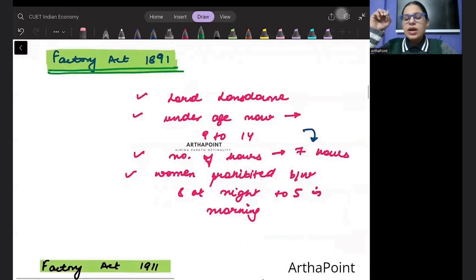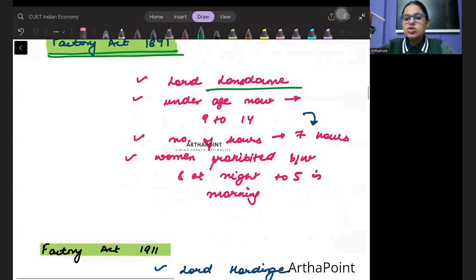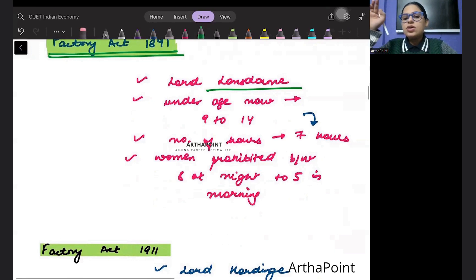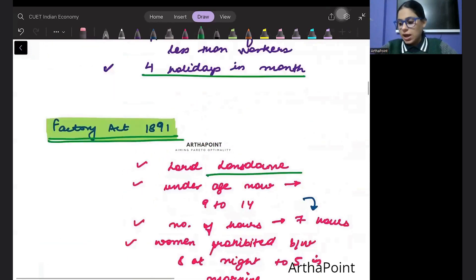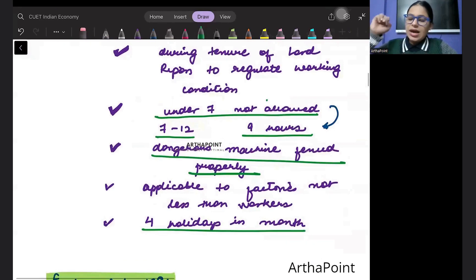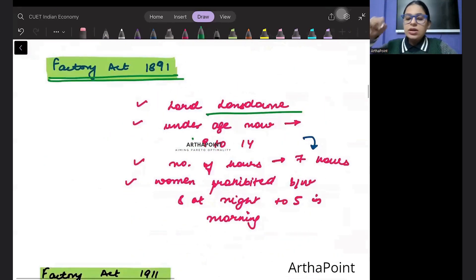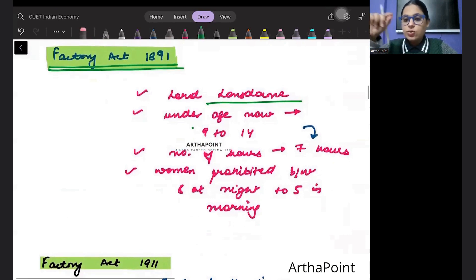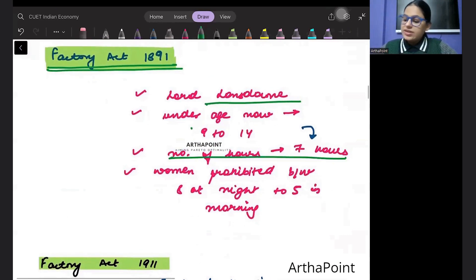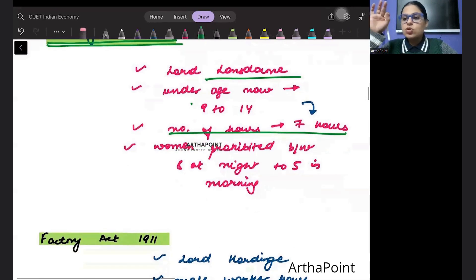This was under Lord Lamsdown and the age was now changed - minimum age was now changed. Now the people who are under the age of nine to fourteen - here minimum age was seven, here minimum age was made nine. And it said that even for children who are in the age of nine to fourteen, the number of hours that they can work every day is going to be seven hours.